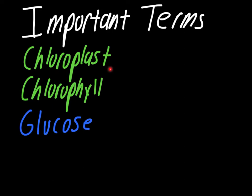Another important thing to know is chlorophyll. Chlorophyll is the actual pigment that absorbs the sunlight — this is what allows plants to absorb the sun. It's also what makes them green, because they absorb every aspect of the color spectrum except for green. So green gets reflected back, which gives plants their green color.